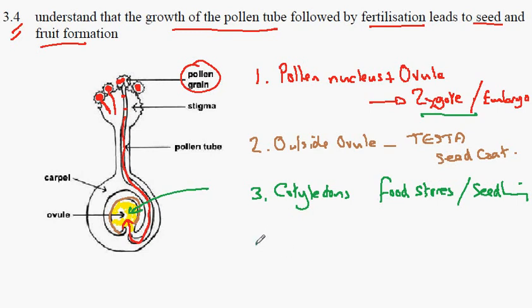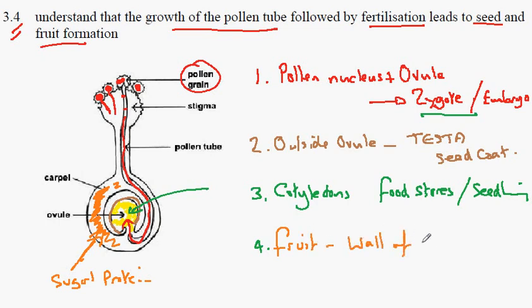And the fourth thing that occurs is the thickening of the walls of the ovary here and the ovule. So the plant will put out a lot of energy into here, things like sugars and protein. So it will build these up and this will form the fruit which is developed from the wall of the ovary or the carpel.